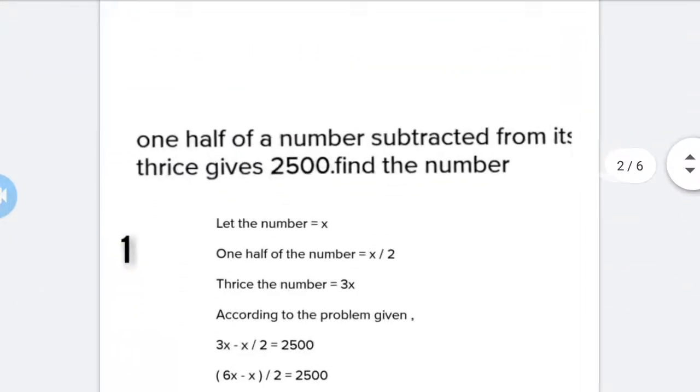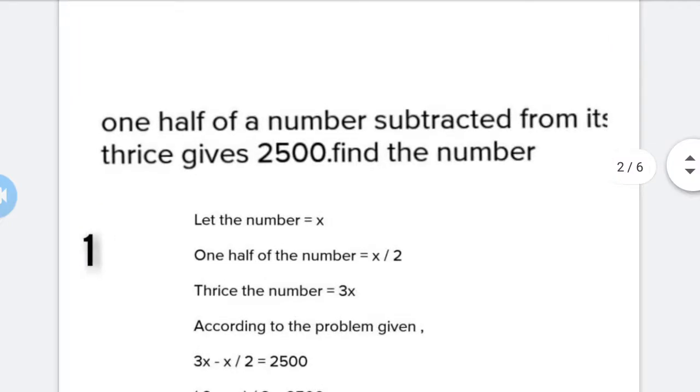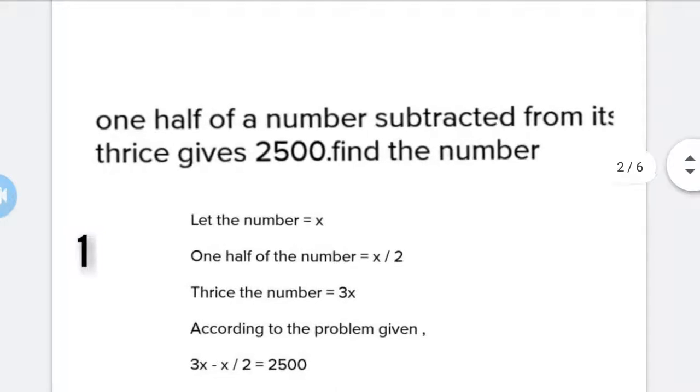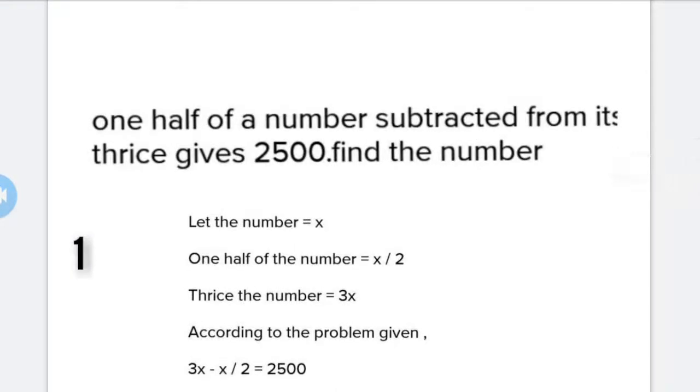Our first question is: one half of a number subtracted from its thrice gives 2500. Find the number. Let's understand the question. One half of a number - we'll take the number as x. Subtract from its thrice means from 3x we subtract x/2, which gives us 2500.